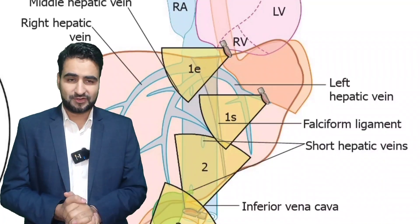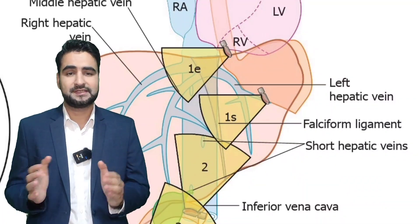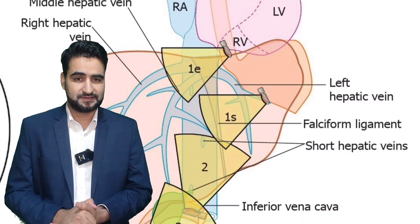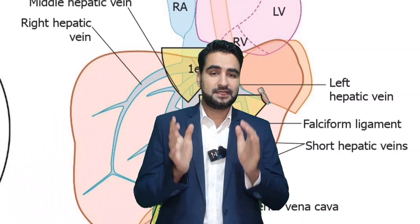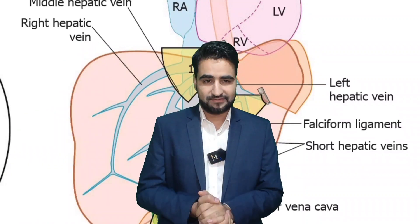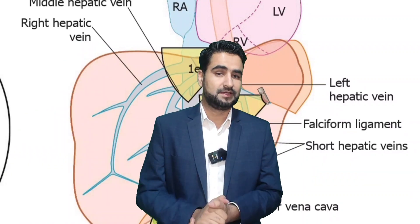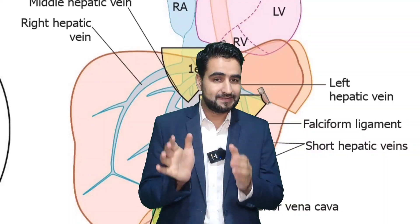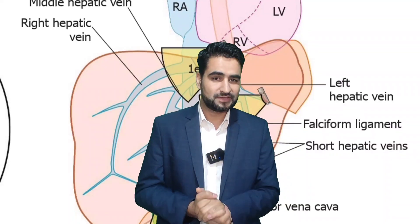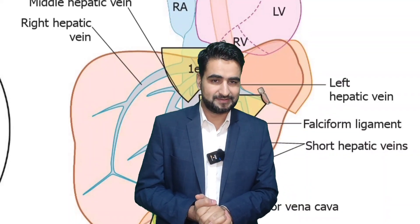Thank you for watching this tutorial on tracing the portal vein and its branches from station 1. In our next session, we will dive deeper into segmental anatomy mapping and discuss how to correlate EUS findings with surgical liver segments. See you in the next video.